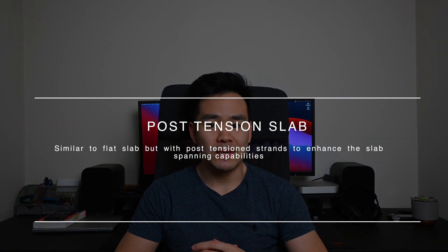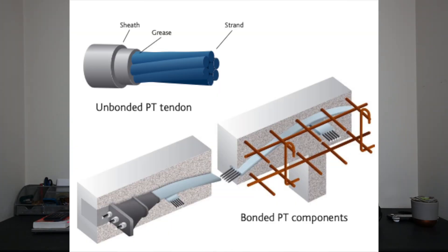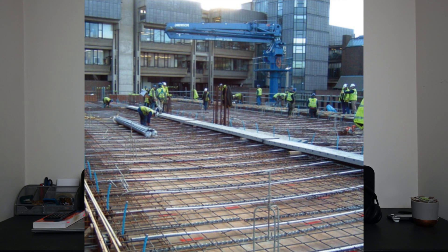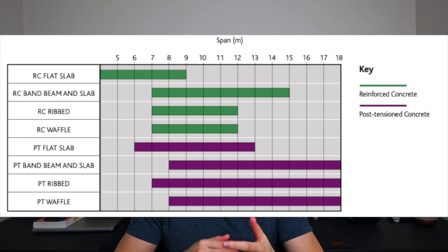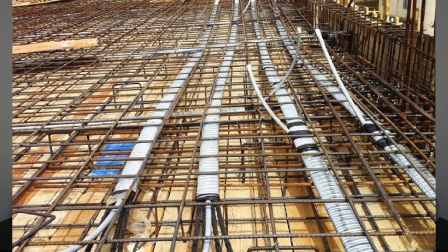A post-tension slab is basically a flat slab but you're introducing pre-stressed or post-tension tendons inside the slab to increase its span capacity. PT slabs are a great alternative to a traditional flat slab when you want to span a further distance whilst maintaining a slimmer profile. The downside of a PT slab is the extra design time and the extra construction time to introduce all these tendons. PT slab design is normally done by a specialist rather than a typical structural engineer, and contracting-wise it's also a more specialized contractor, likely subcontracted by the main concrete frame contractor.